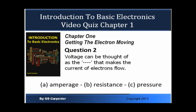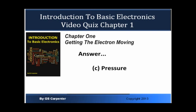Okay, Question 2. Voltage can be thought of as the blank that makes the current of electrons flow. A, Average; B, Resistance; or C, Pressure. Answer: C, Pressure.